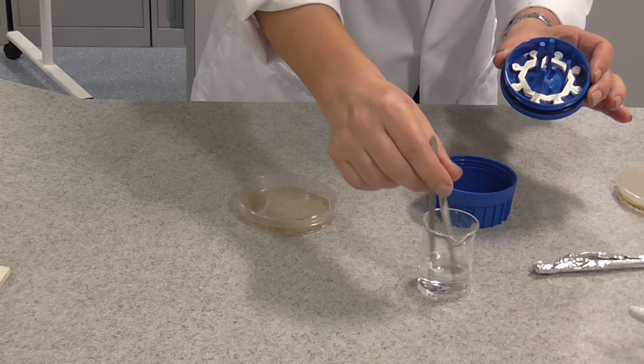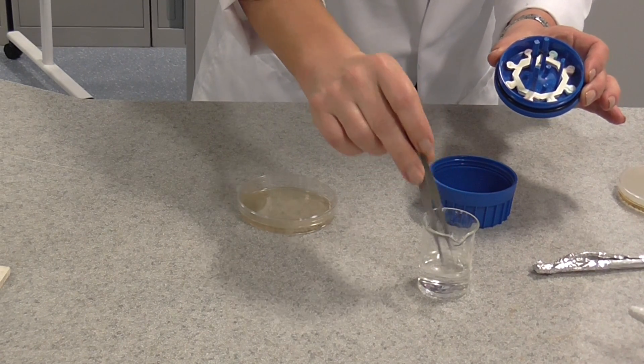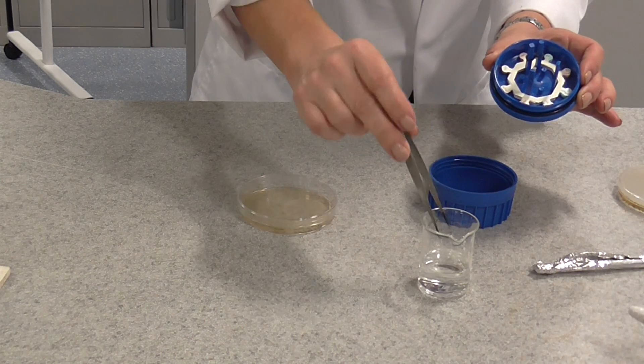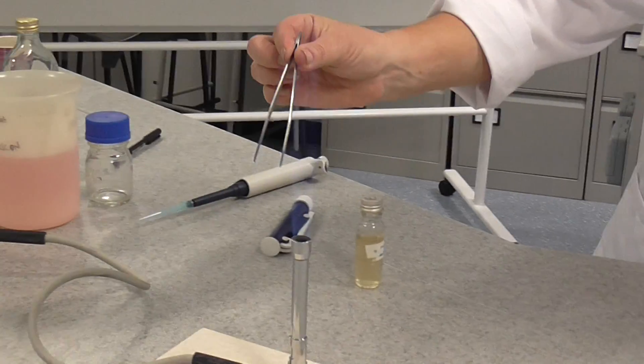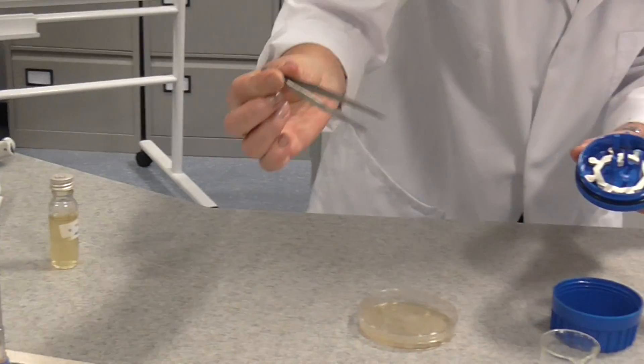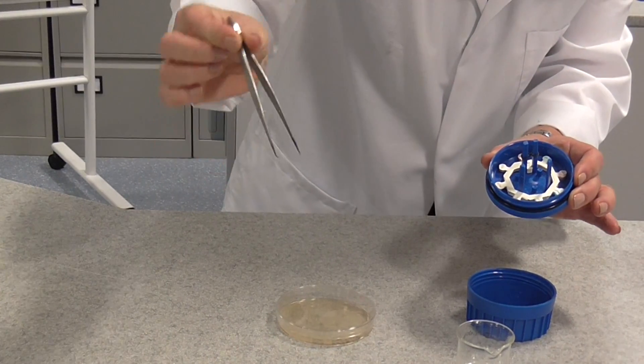I've got to use aseptic technique again to do this. So this time, I'm going to use some forceps. They're in ethanol and I'm going to just flame them to sterilise them. So they've got some ethanol on them. Put those in your bunsen burner flame and you should see the ethanol there burning. And this will sterilise the forceps.